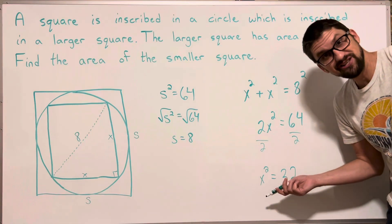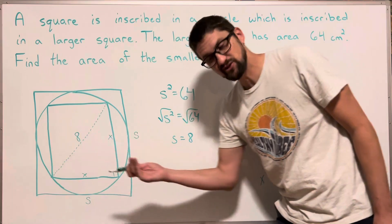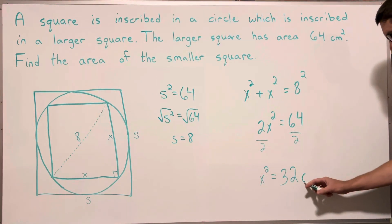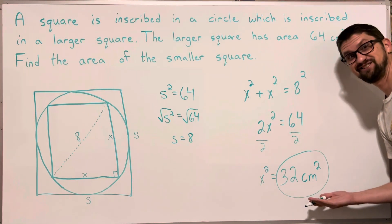x squared is actually the area of the smaller square. The area of the smaller square is x times x which is x squared. So I found it right here. So the area is going to be 32 square centimeters. There you go.